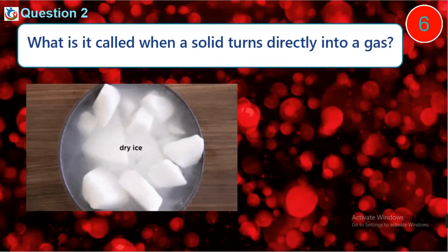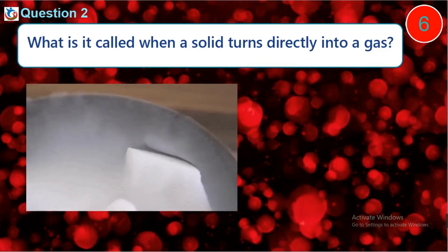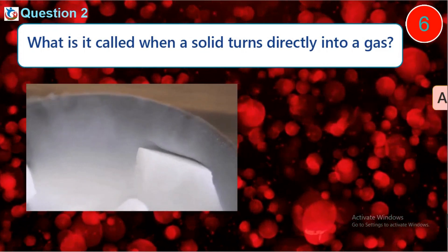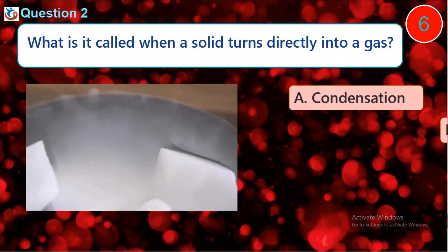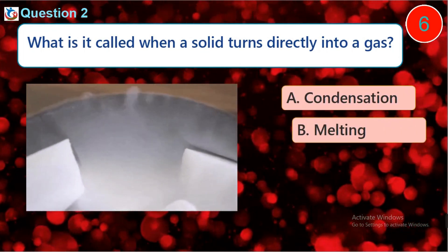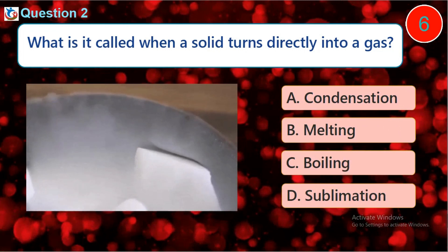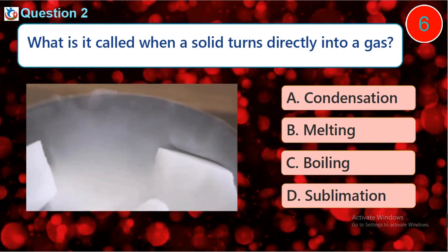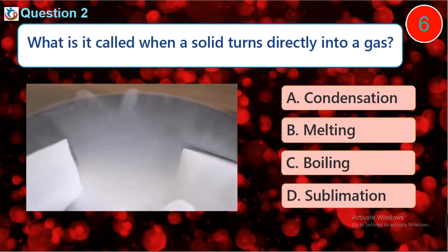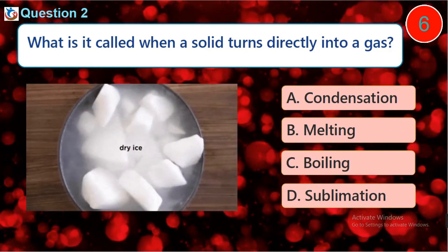Question 2. What is it called when a solid turns directly into a gas? A. Condensation. B. Melting. C. Boiling. D. Sublimation.